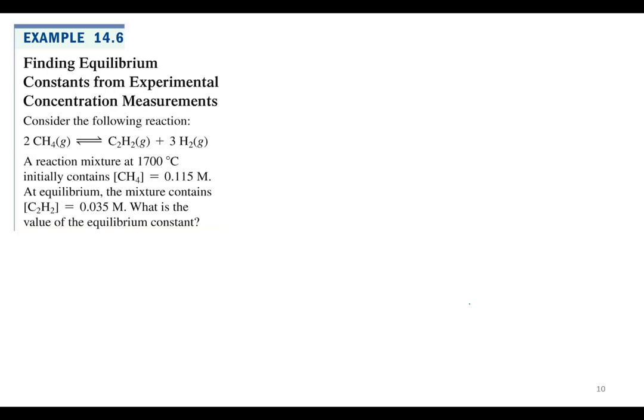So reaction mixture is 1700 degrees, they're just telling you that because of course it's temperature dependent. Initially contains 0.115 and at equilibrium the C2H2 that's acetylene is 0.035. Anytime here's the key words, anytime you see initially and then equilibrium, I and E, ice. As soon as you see that initial and that equilibrium you know you're gonna need an ice table.